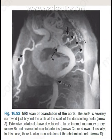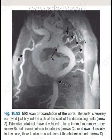In this diagram, an MRI scan of coarctation of the aorta is shown. The aorta is severely narrowed just beyond the arch at the start of the descending aorta, as shown in arrow A. Extensive collaterals have developed: a large internal mammary artery is seen in arrow B, and several intercostal arteries are seen in arrow C. Unusually in this case, there is also a coarctation of the abdominal aorta, shown in arrow D.